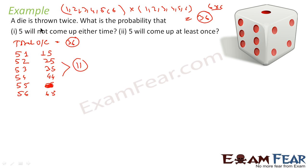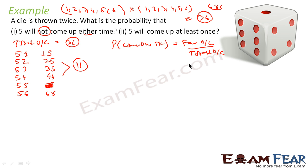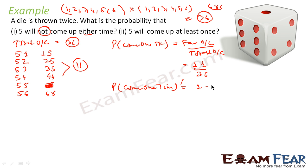The first part of the question asks for the probability that 5 does not come up either time, which is the complement of 5 coming at least once. Probability of 5 coming at least once = 11/36. So probability of 5 not coming either time = 1 − 11/36 = 25/36.